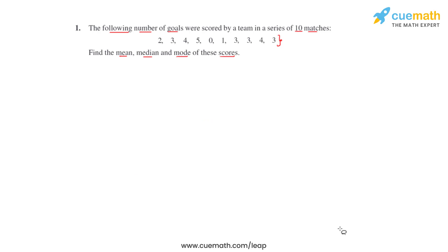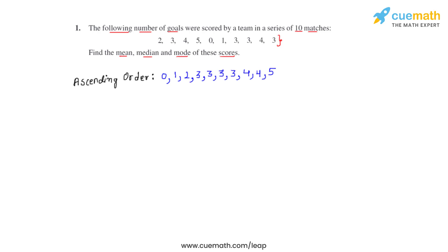The next part is to find the median. To find the median, we arrange the scores either in ascending or descending order. By ascending order we mean starting from the lowest score and going to the highest, and by descending order we mean starting from the highest and going to the lowest. We write the given scores in ascending order, and the arranged order is as shown.